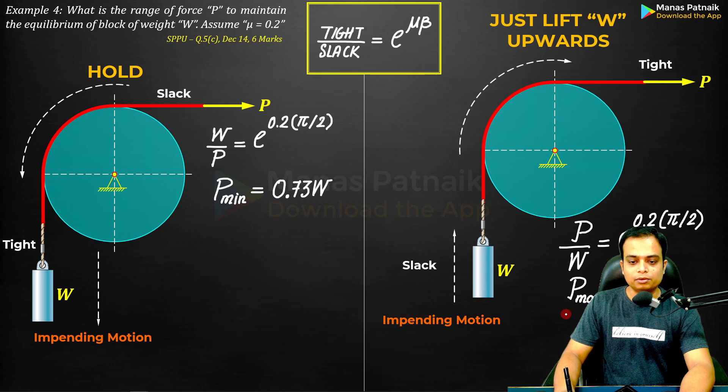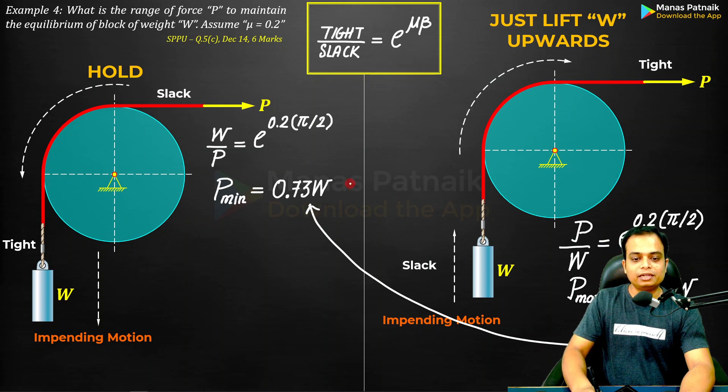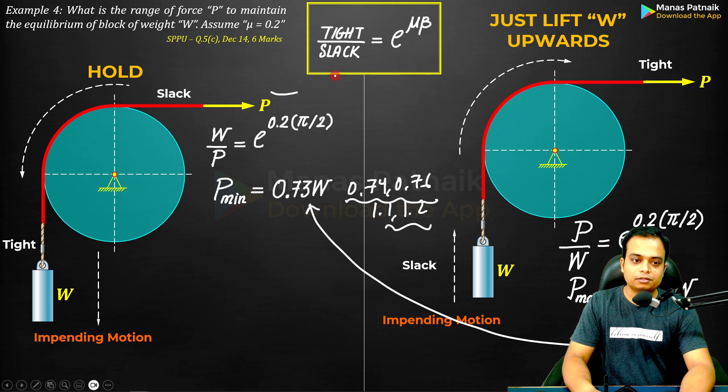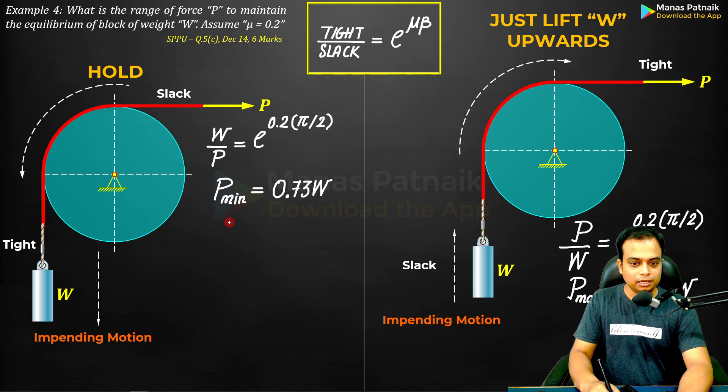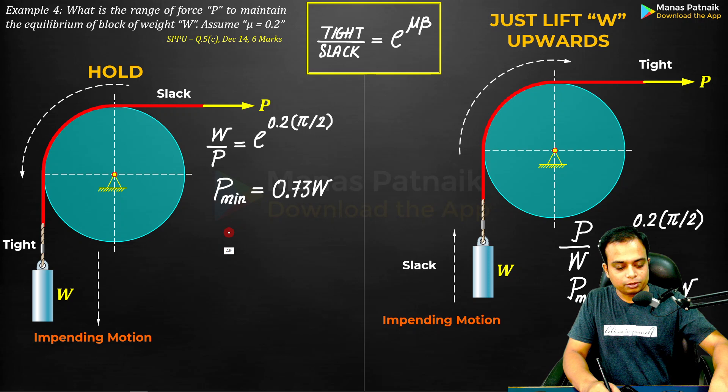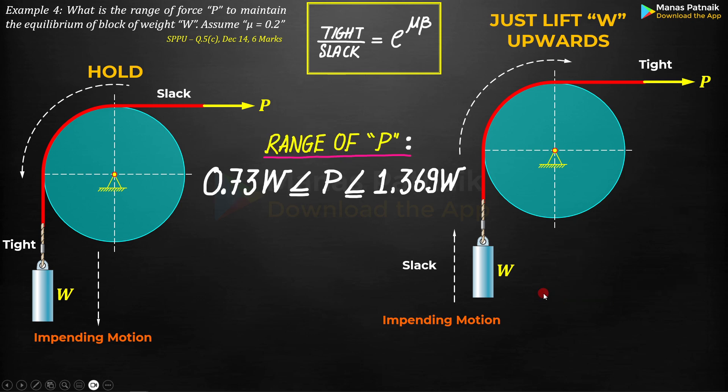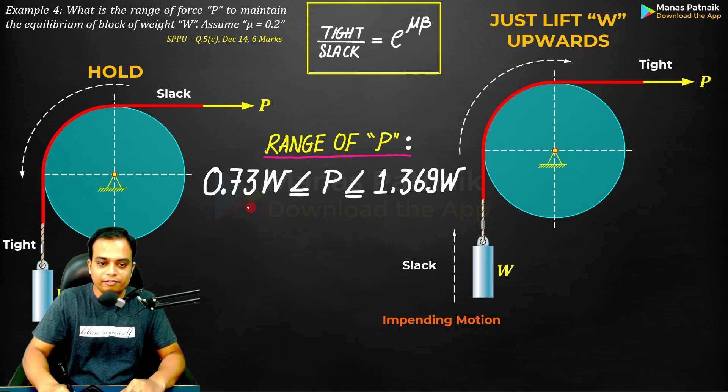Do the math. This is the maximum value. And in between these two values, 0.73, if you keep the values 0.74, 0.76, or 1.1, 1.2, if you keep these values of P, the system will always stay in equilibrium. That means it will maintain this level. So I have combined both the results. This is 1.369, right? Very simple.